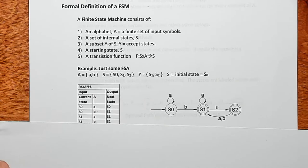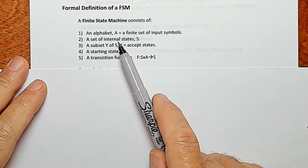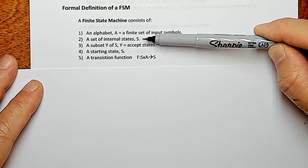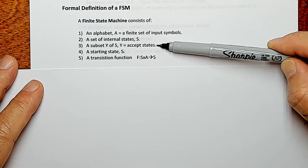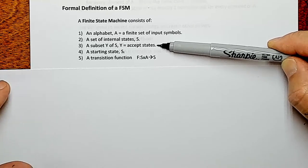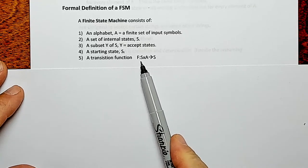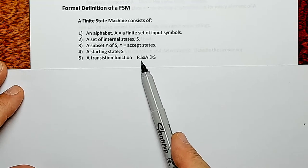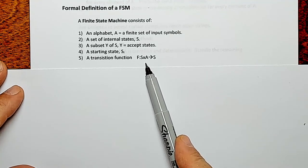Let's get into the math part of this. We need a formal definition of a state machine. A state machine has these components: an alphabet A, which is a finite set of input symbols; a set of internal states S; a subset Y of S, which is the set of all accept states; a starting state; and a transition function F. F is a function that maps the Cartesian product S cross A back into S — it takes ordered pairs consisting of some state and some input element of the alphabet, and outputs another state.